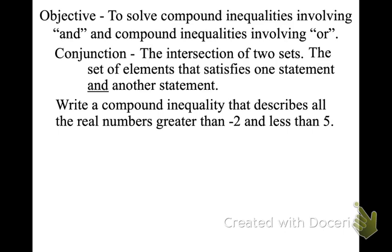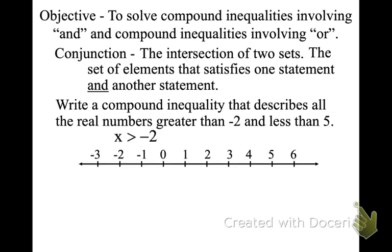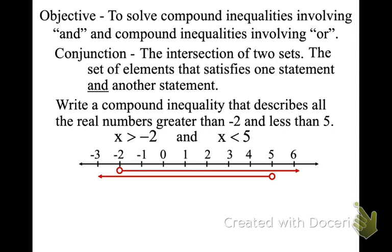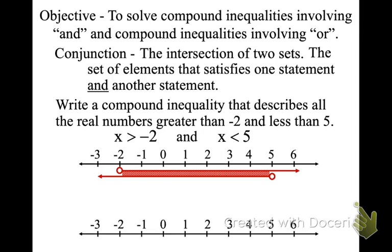Write a compound inequality that describes all real numbers greater than negative 2 and less than 5. If I'm showing greater than negative 2 but less than 5, I'm going to graph both. Since this is an AND statement, it's an intersection, and we only want to see the intersection — you don't continue those lines through. These are the numbers that are part of the solution set. Nothing beyond. When you keep the arrow, it implies that everything beyond.